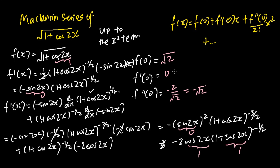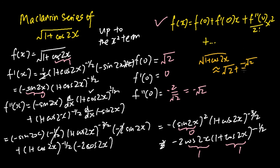Once we have f(0), f'(0), and f''(0), we can use the formula to find our Maclaurin series of square root of 1 plus cosine 2x. The series up to the x squared term is: f(0) equals square root of 2, plus f'(0) which is 0, plus f''(0) over 2 factorial times x squared, which is negative square root of 2 over 2 times x squared. So the final answer is square root of 2 minus square root of 2 over 2 times x squared.